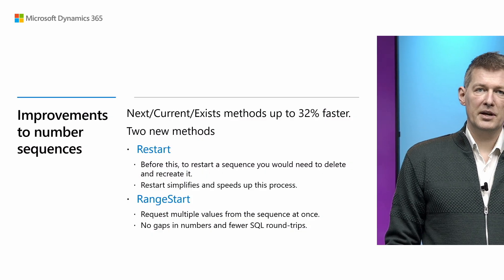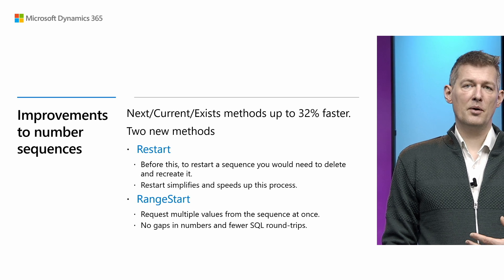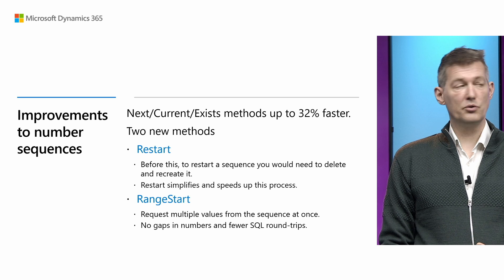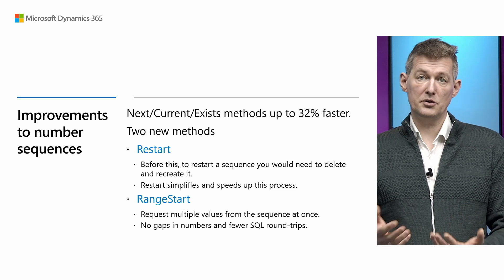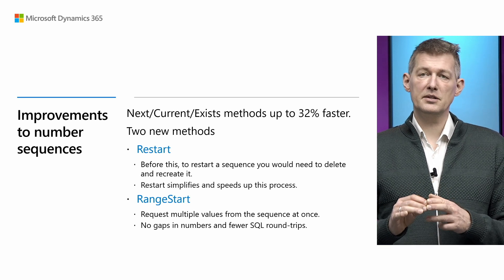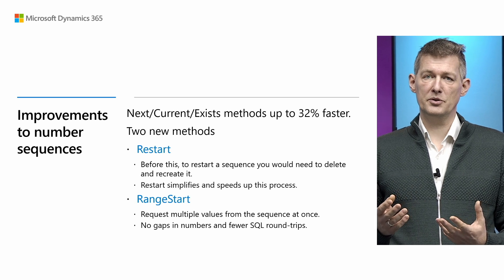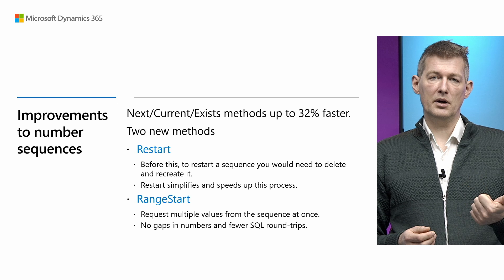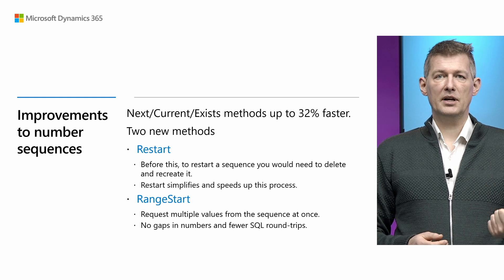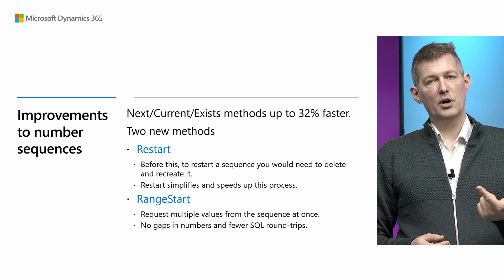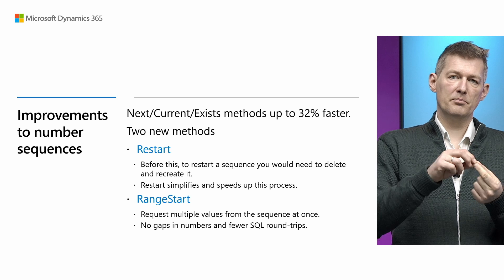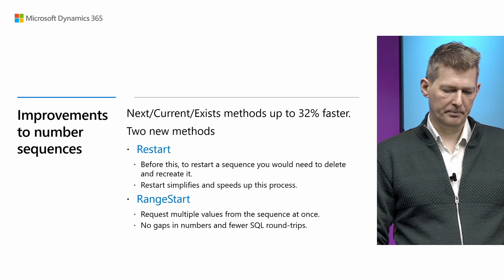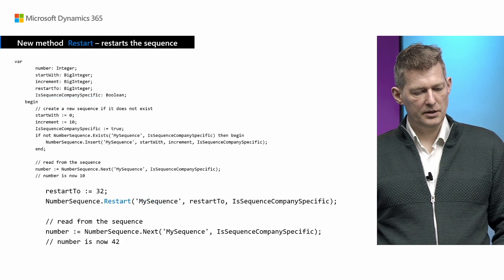In this Release Wave we added some new capabilities to the number sequence object and also tuned the existing methods. The next, current, and exist methods are up to 32% faster. We also introduced two new methods: the ability to restart a number sequence, and the ability to get multiple numbers without having to call SQL every single time.